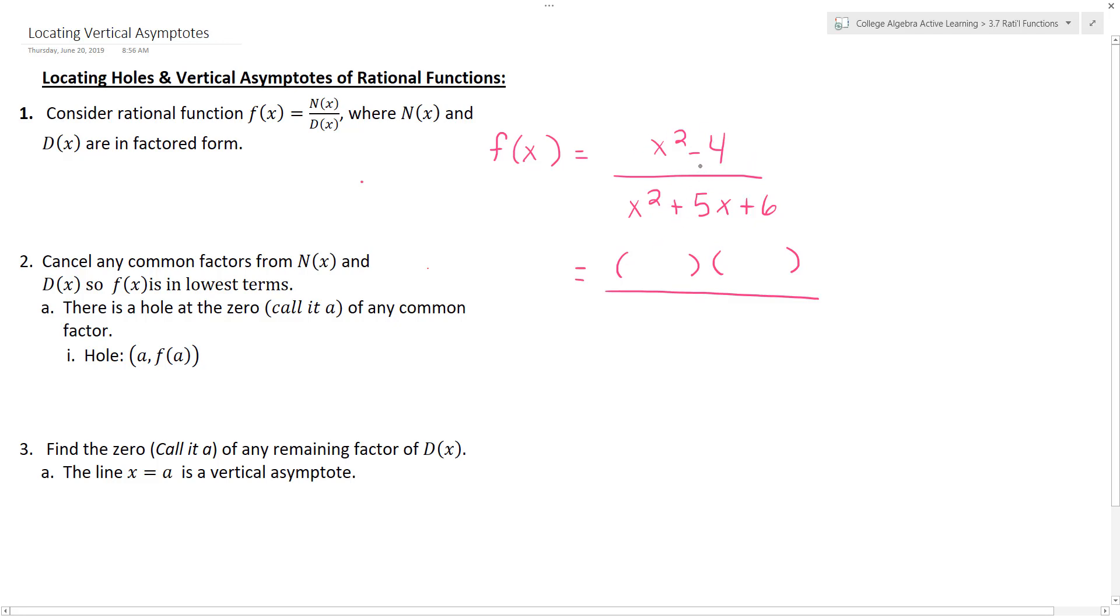What two numbers multiply together to give you negative 4 but add together to give you that middle value of 0 that you don't see? That would be negative 2 and positive 2. And we know that x times x gives us our x squared.